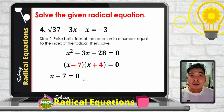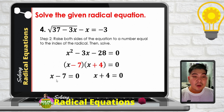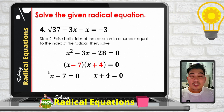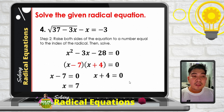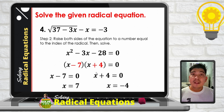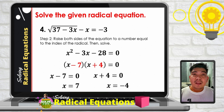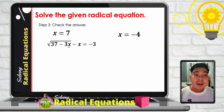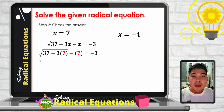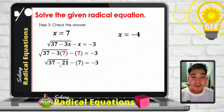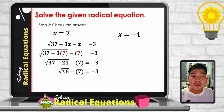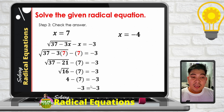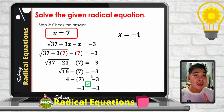Applying the zero product property: x minus 7 equals 0 gives x equals 7, and x plus 4 equals 0 gives x equals negative 4. Now we check x equals 7 in the original equation: negative 3 times 7 is negative 21; 37 minus 21 is 16, so we get square root of 16 minus 7 equals 4 minus 7 equals negative 3. Both sides are equal, so x equals 7 is a valid solution.